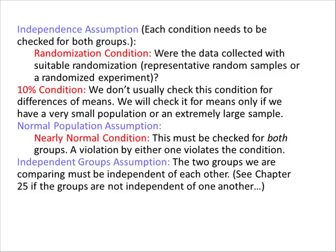We have some conditions. We have the independence assumption. You need to check these for both groups. You need to make sure you have a randomized experiment. You want the 10% condition. We don't usually check this condition for differences of means, but we will check this condition. We need to check it for means only if we have a very small population or an extremely large sample. You have the normal population assumption. This must be checked for both groups. A violation by either one violates this condition.